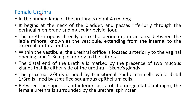About the structure of the female urethra: its length is about 4 cm. It begins at the neck of the bladder and passes inferiorly through the pelvic floor muscles. It opens directly into the perineum in an area called the vestibule. It extends from the internal urethral orifice to the external urethral orifice. Within the vestibule, anteriorly is the vaginal opening and posteriorly is the clitoris. The distal end of the urethra is marked by the presence of two mucous glands called Skene's glands.